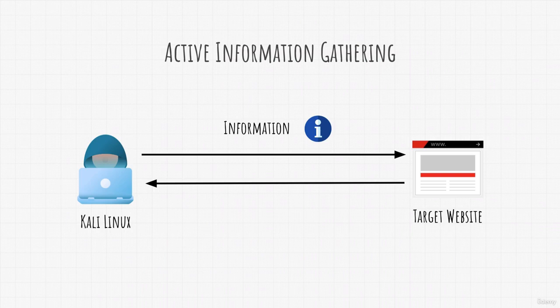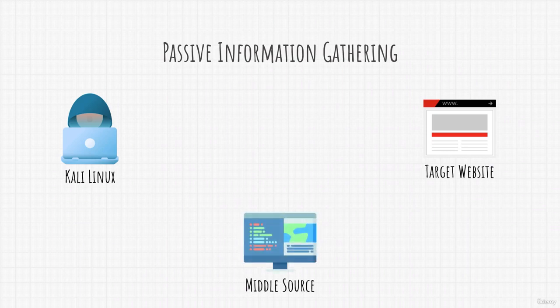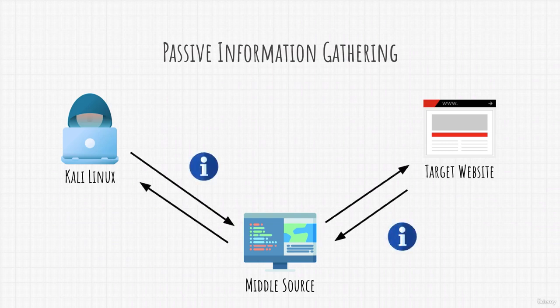On the other hand, we have passive information gathering. It is similar — we have our Kali Linux machine and our target — but we also have an intermediate system, or what I like to call a middle source. This middle source could be anything: from a search engine to a website, or even a person. What matters is that the information we get passes through that middle source. For example, if we google a target to find pages containing information about it, this is passive information gathering.